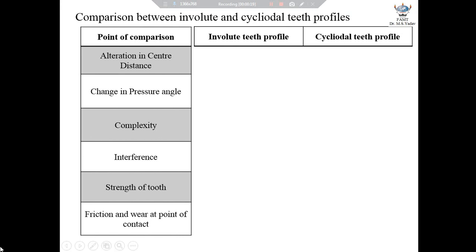The first one is alteration in the center distance and its effect on angular velocity ratio. The second one is a change in pressure angle. The third one is complexity of tooth profile. The fourth one is the occurrence of interference. The fifth one is the strength of the tooth, and the sixth and last one is friction and wear at the point of contact.